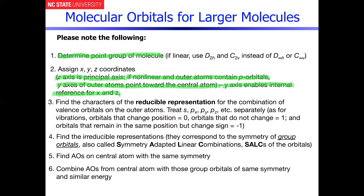You're going to do everything we've normally done except now, because we're not dealing only with sigma interactions, we have to be concerned with pi interactions occurring between the central atom and the outer atoms. What you do is treat the s's together, the px's together, the py orbitals together, and the pz atomic orbitals together on the outer atoms. If the orbitals change position, character is zero. If they do not change, character is one. If they remain in the same position but change sign, it's minus one. That is very characteristic of what happens with p orbitals.